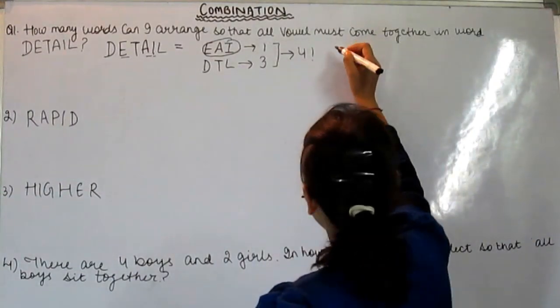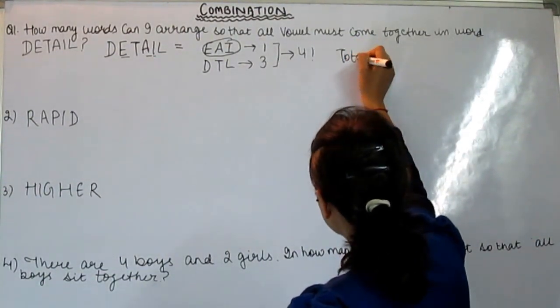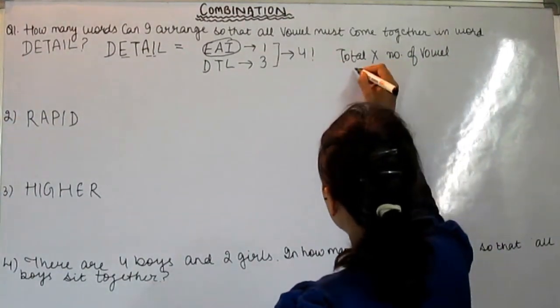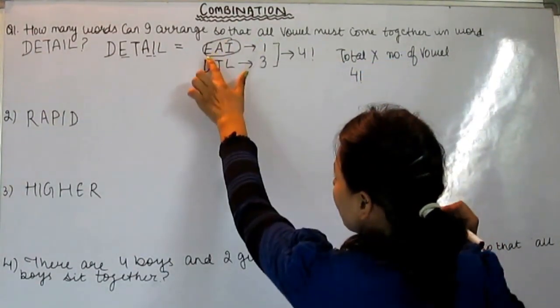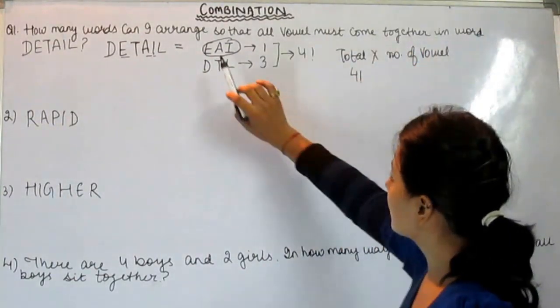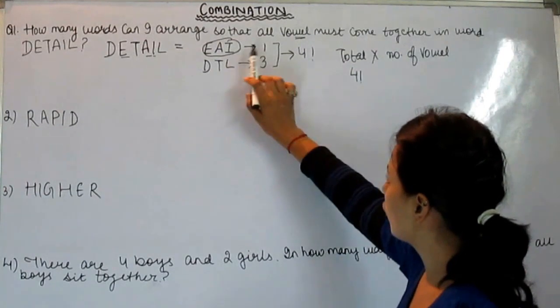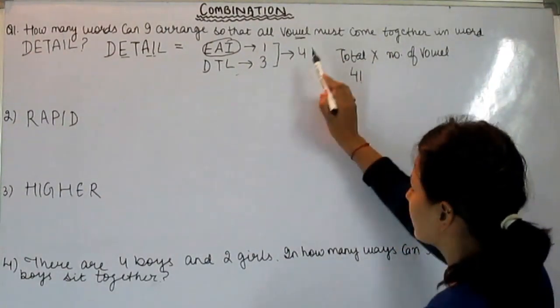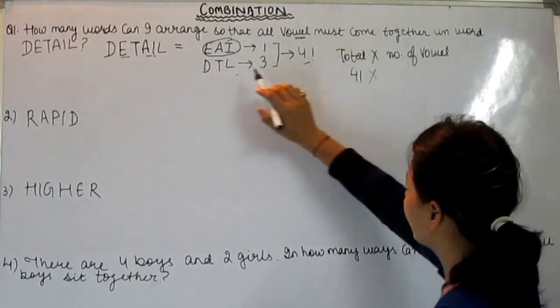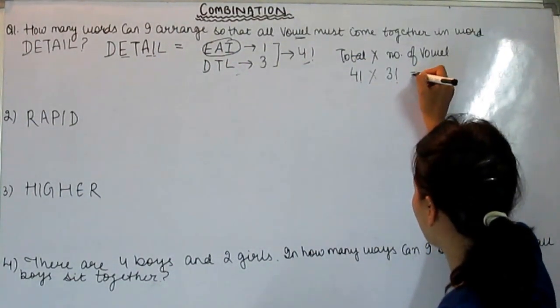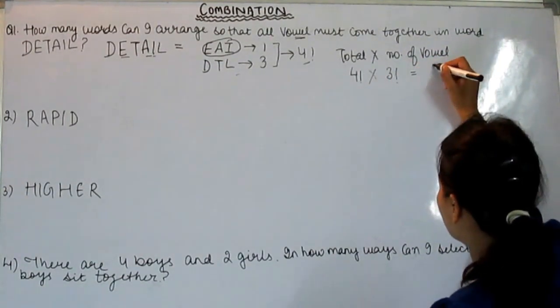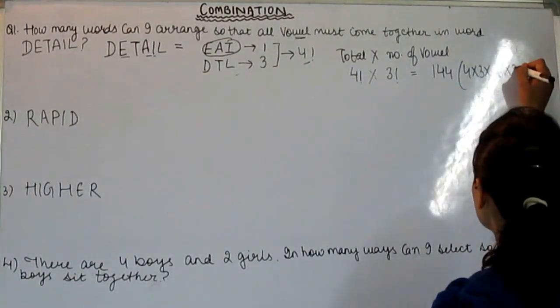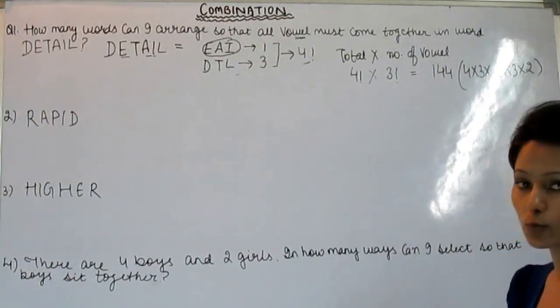Here we will write total into number of vowels. Total is how many? Four factorial into three factorial. We will calculate: 4 factorial times 3 factorial equals 24 times 6 equals 144. We will get the answer, that is 144.